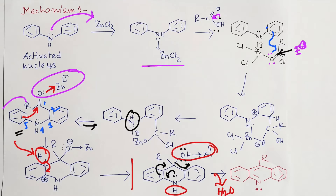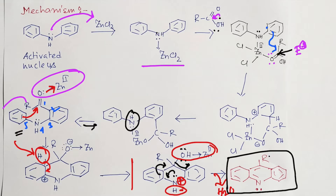Since the Lewis acid is coordinated to oxygen, elimination proceeds efficiently. The nitrogen lone pair is pushed through the ring, and the OH leaves — it is not a good leaving group normally, but in the presence of Zn²⁺ (Lewis acid), the negative charge density on oxygen is stabilized through coordination, making it a good leaving group. After this donation, nitrogen has a formal positive charge, which is neutralized by proton abstraction, giving the R-substituted acridine product.